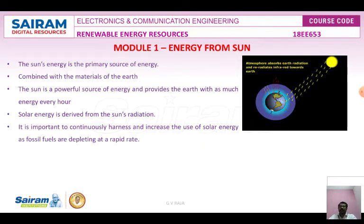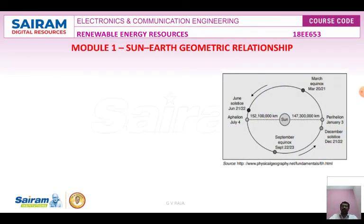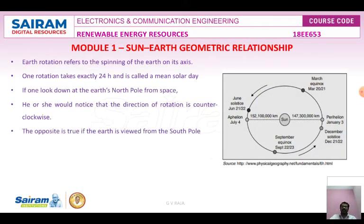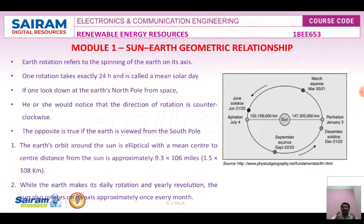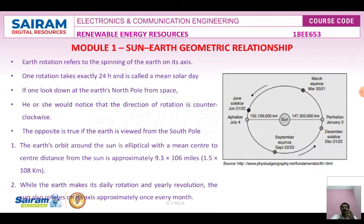Now we will see the sun-earth geometric relationship. The Earth rotates on its own axis — this spinning is called Earth rotation. One rotation takes nearly exactly 24 hours, which we call one day or, in technical terms, a solar day.